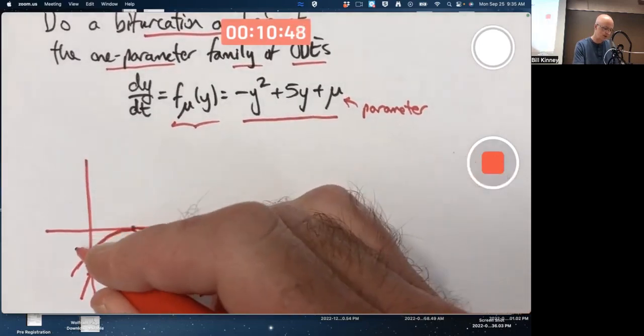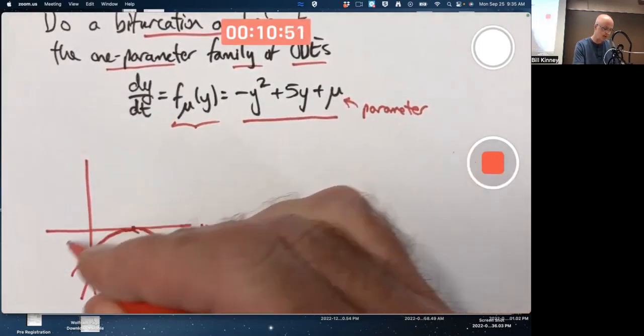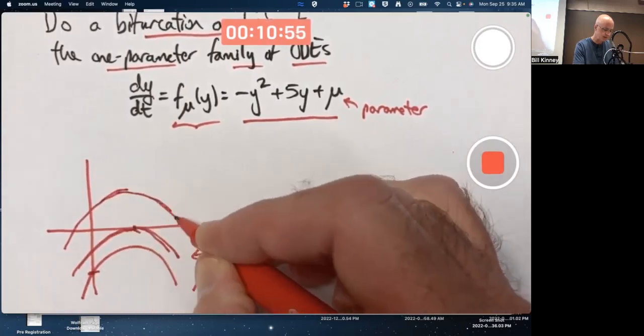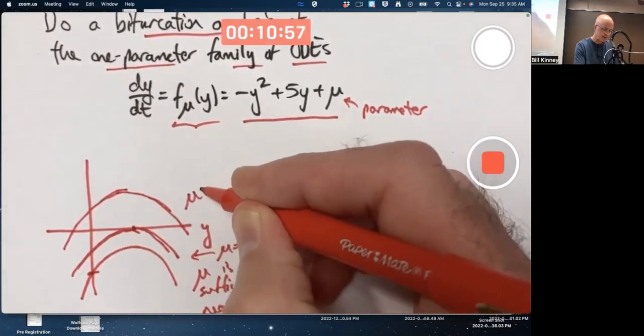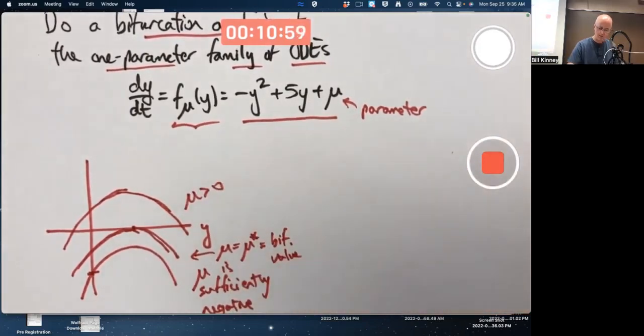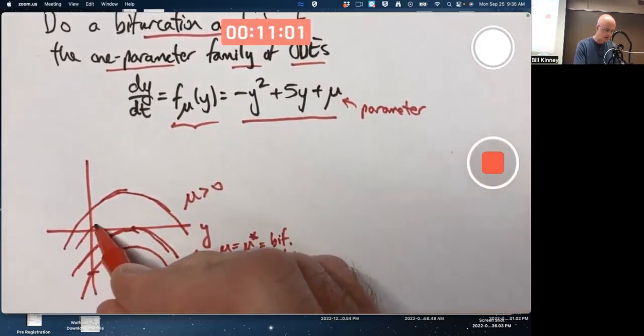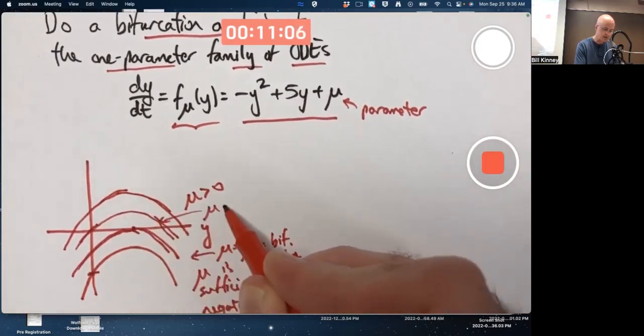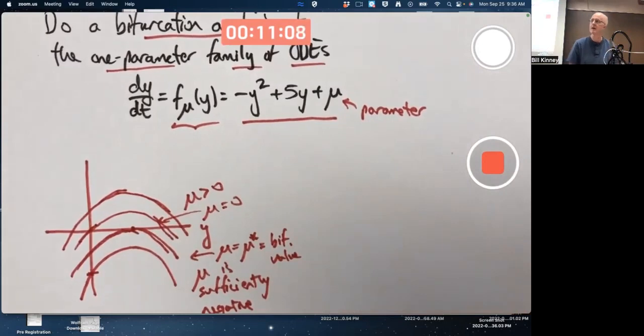And then when mu is sufficiently large, well, when mu is 0, you're right here. If mu is positive, you're up here. This is when mu is positive, you'd be up here. When mu is 0, I could go ahead and draw that as well. We're past the bifurcation value when mu is 0, but I'll go ahead and draw it anyway. The bifurcation value is going to be some negative number.